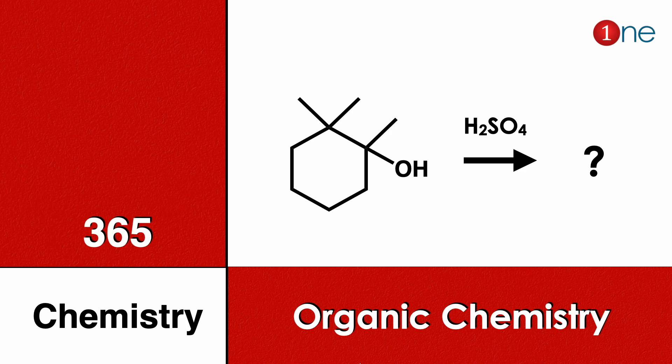Welcome to One Chemistry. This is the 365 Chemistry Series — organic chemistry questions. Here you have cyclohexane with three methyl groups and an alcohol. You are using sulfuric acid. Find what the final product will be.